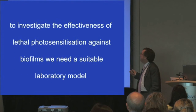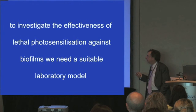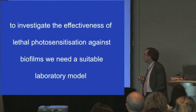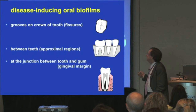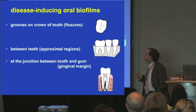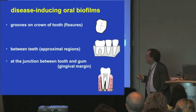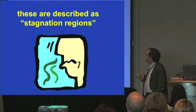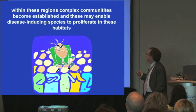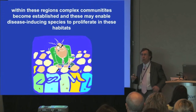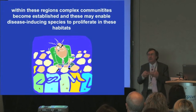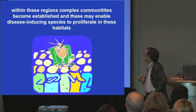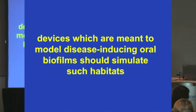If we're going to investigate the susceptibility of biofilms to lethal photosensitization, it's important we have a suitable laboratory model. What is characteristic about disease-inducing oral biofilms? These are all basically stagnation areas — regions of plaque accumulation. Within these stagnation regions, the ecology is altered so that certain disease-inducing organisms can eventually predominate. So if we're going to grow oral biofilms in the laboratory, we've got to try and simulate these stagnation areas and particular habitats.